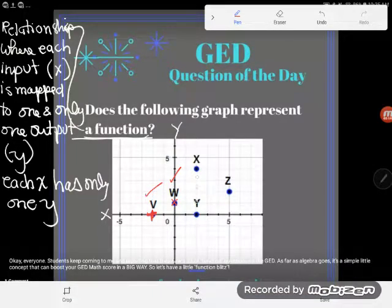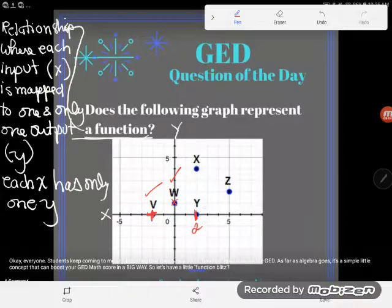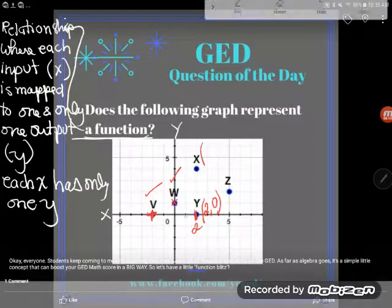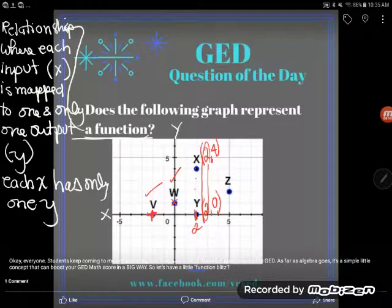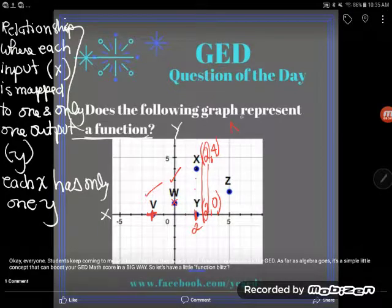But right here, this is where I catch this relationship cheating, as I call it. This is an x value of two. I have two different points here - one is the point (2,0) and one is the point (2,4). You can see right here that these two points have the same x value but different y's. We caught our x cheating, and so therefore this graph is not a function.